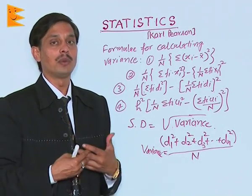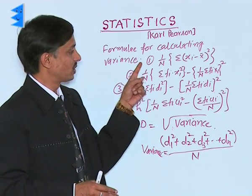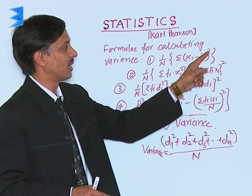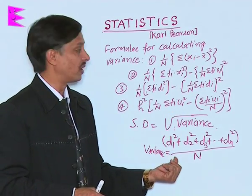As per the requirement of the question, I am explaining all the results. The first result is (1/n) Σ(xᵢ - x̄)². This is the expanded notation of the formula.